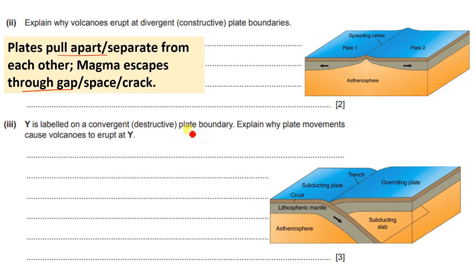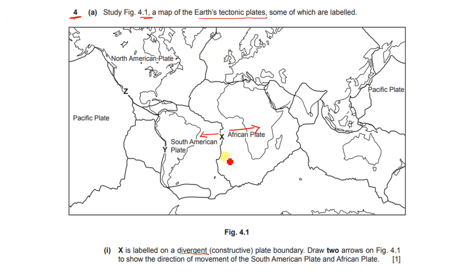Now, Y is labeled on a convergent or destructive plate boundary. Explain why plate movement causes volcanoes to erupt at Y. We are told this is a destructive plate boundary, so the plates are moving towards each other.